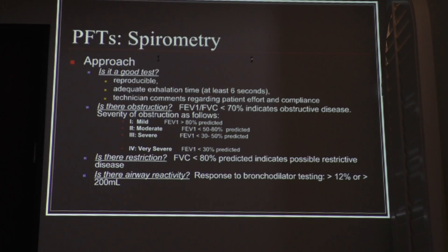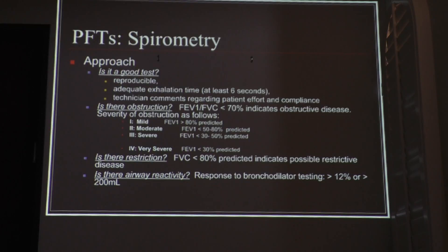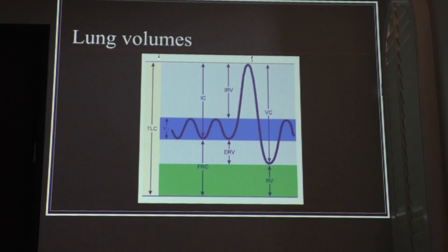When you have mild obstruction, the FEV1 is greater than 80% of predicted. When the FEV1 is less than 30% of predicted, that's almost consistent with respiratory failure. If the FVC is less than 80%, you start thinking about a combined obstructive and restrictive process. For airway reactivity, if you see an increase of 12% on the FEV1 or 200 mL after a bronchodilator, there may be a reactive airway process going on as well.